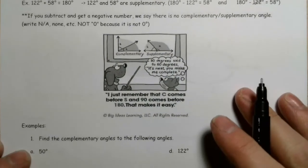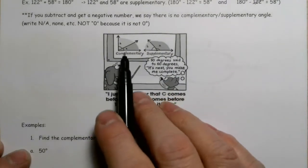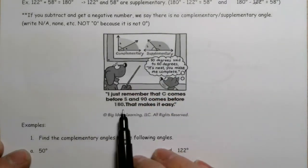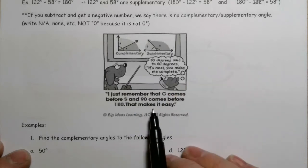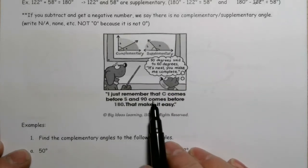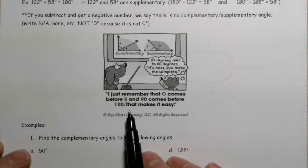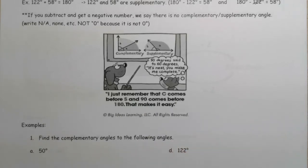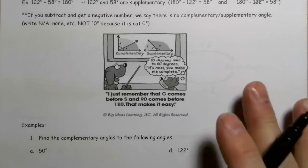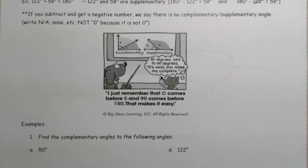Just a little tip to help you remember: two complementary angles add up to 90, and two supplementary angles add up to 180. C comes before S, and 90 comes before 180 — that makes it easy to remember. Now let's take a look at finding some complementary and supplementary angles.